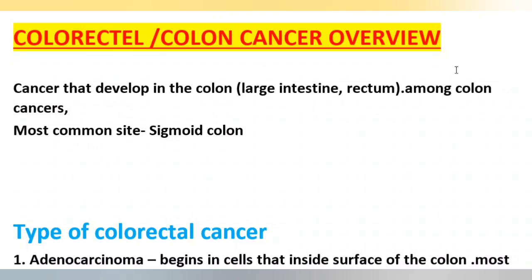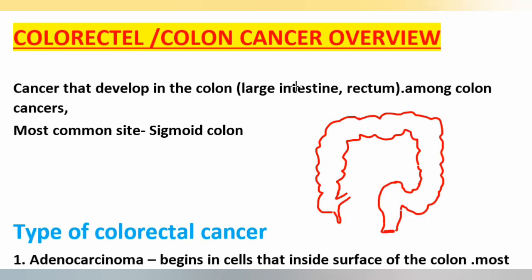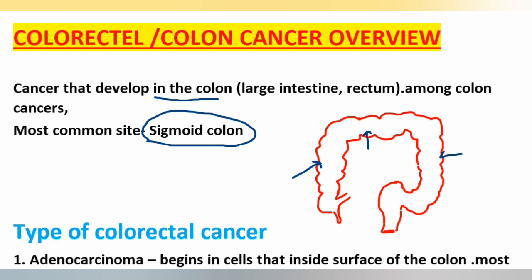Colorectal or colon cancer overview. Colon cancer is cancer that develops in the large intestine. Among the colorectal cancer sites, the most common is the sigmoid colon. Other parts include the ascending colon, transverse colon, descending colon, sigmoid colon, rectum, and anus.